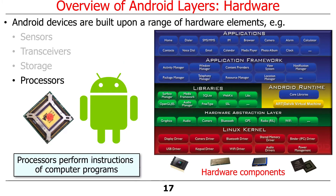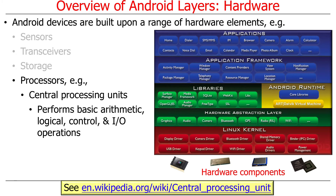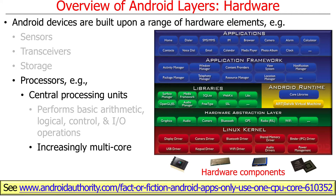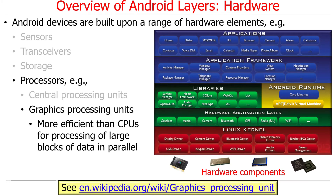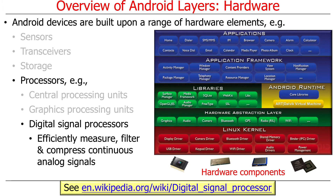Of course there are processors, which do the computation. We were talking about CPUs — the big and small configurations. CPUs do the basic processing, and more and more of these are multi-core. We're also getting GPUs on mobile devices that are more efficient for certain kinds of processing, especially graphics processing. And there are DSPs — digital signal processors — which handle the radio communication under the hood, managing analog-to-digital conversions and so on.